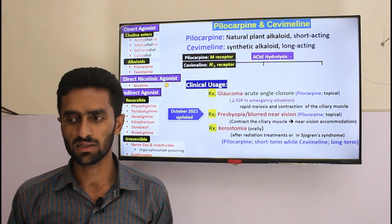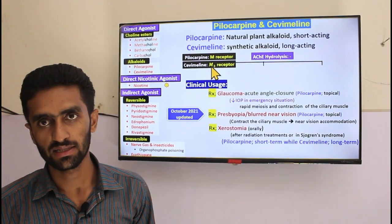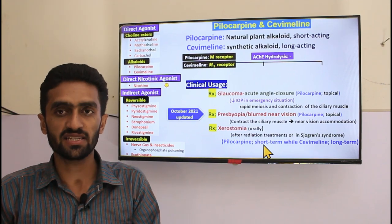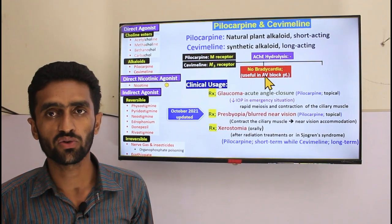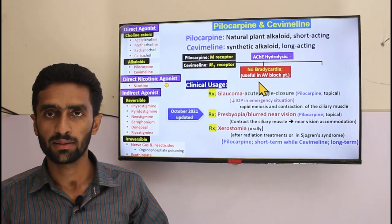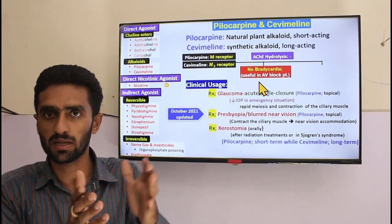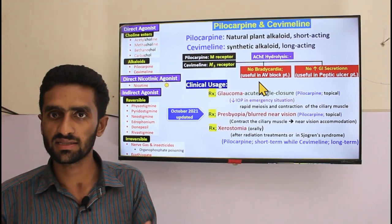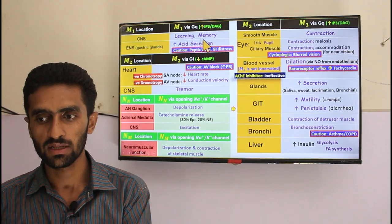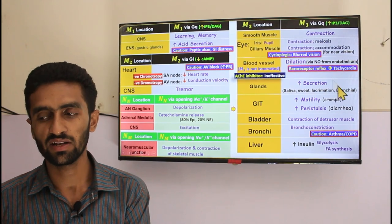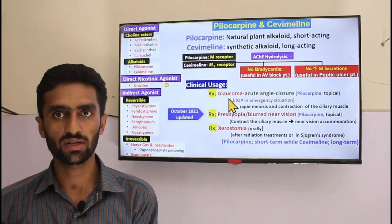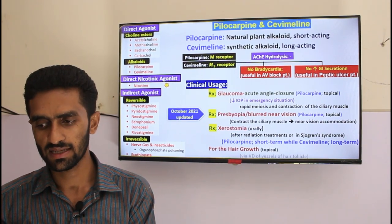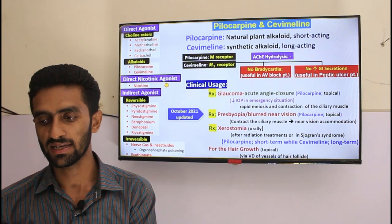Understanding receptor selectivity is important: since cevimeline is M3-selective, it does not cause bradycardia (no effect on M2 heart receptors) and does not increase gastric acid secretion (no effect on M1). So cevimeline is the drug of choice for patients with AV block or peptic ulcer. Topical use also promotes hair growth by causing vasodilation, increasing blood flow to hair follicles.